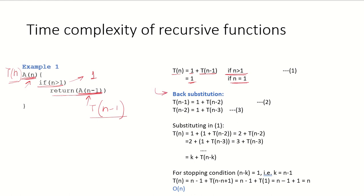We are going to use a technique called back substitution, and we are going to substitute T(n-1) in this recurrence relation for T(n). If T(n) = 1 + T(n-1), that means T(n-1) = 1 + T(n-2). Again, T(n-2) = 1 + T(n-3). We substitute these values of T(n-1) and T(n-2) in the equation for T(n), and we get T(n) = 1 + (1 + T(n-2)), which gives us 2 + T(n-2).